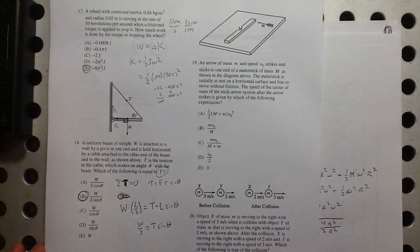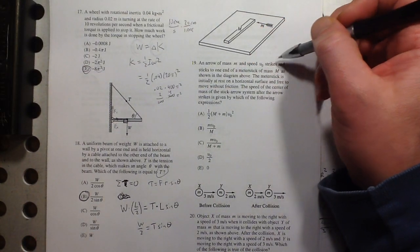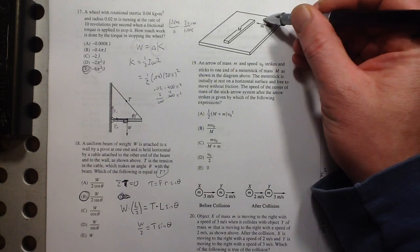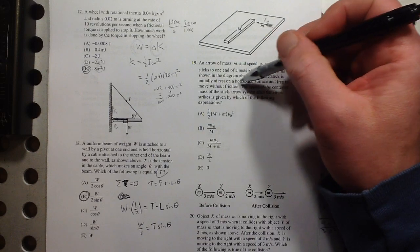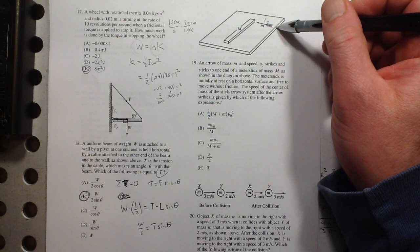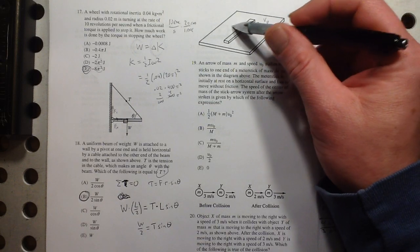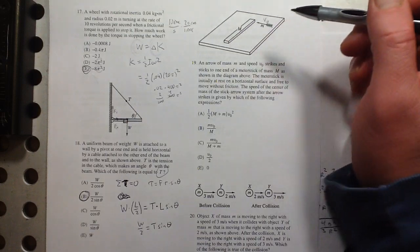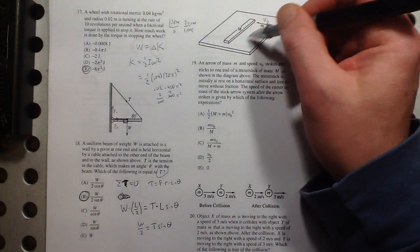Not a hard problem, if you know how to do it. Here, an arrow of mass M and speed V sub 0 strikes and sticks to one end of a meter stick. Meter stick is initially at rest. Speed of the center of mass of the stick arrow system. So this can move in a linear fashion. And this also, it's not on a fixed axis. So this can also move. Which means that linear momentum will be conserved. It's also going to rotate.